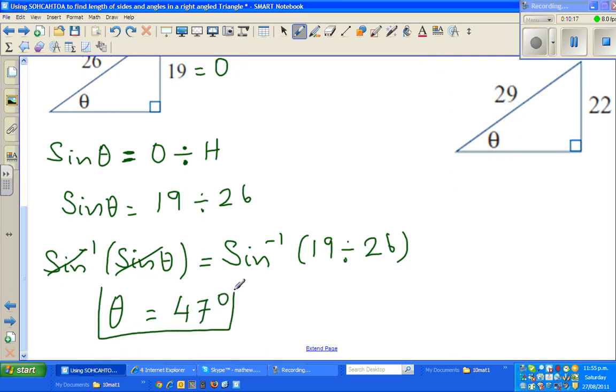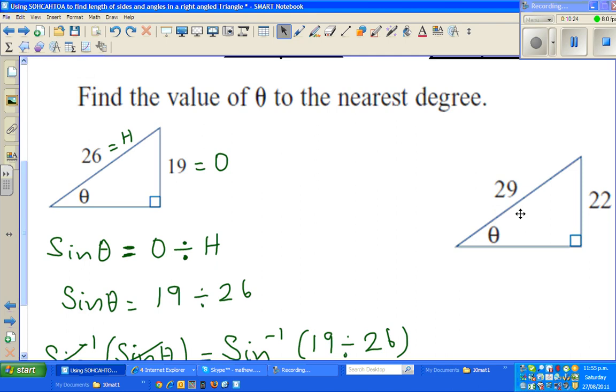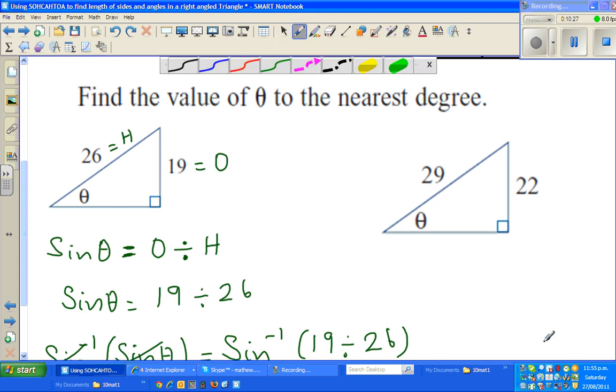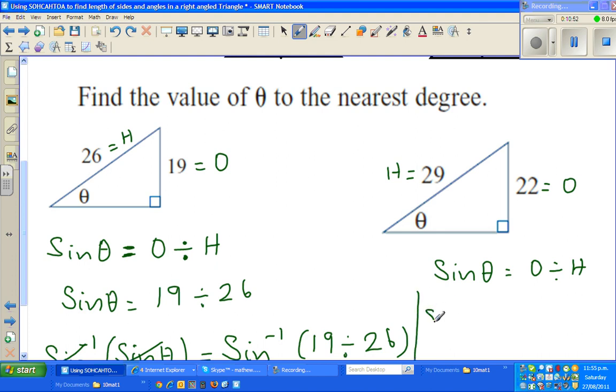Let me do one more question here. So the same thing, you have to label the sides. Again, this is opposite. This is hypotenuse. So again, you have to use sine. I'll go over this very fast. So sine theta is O divided by H, because you are dealing with O and H. So sine inverse of sine theta. So directly I can write theta is sine inverse of O, which is 22 divided by 29.